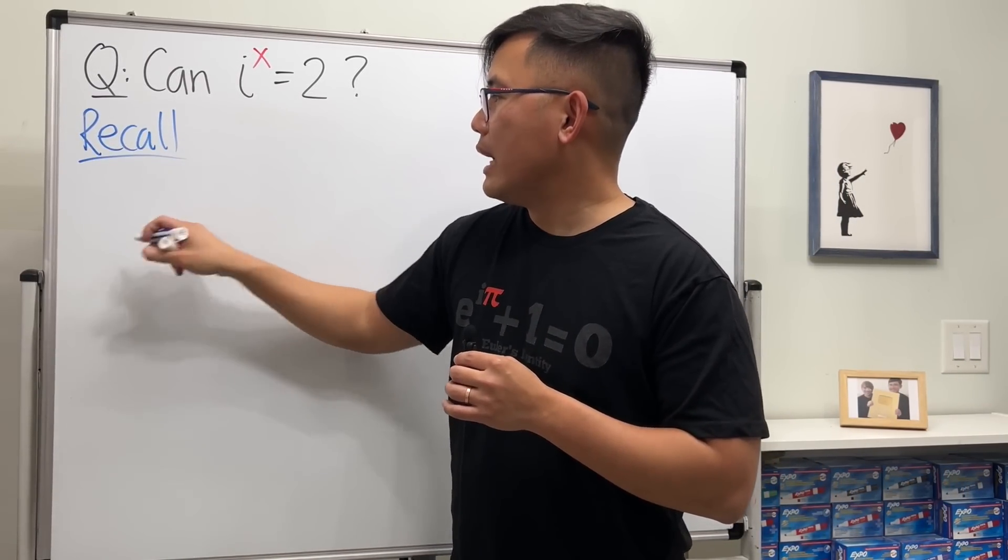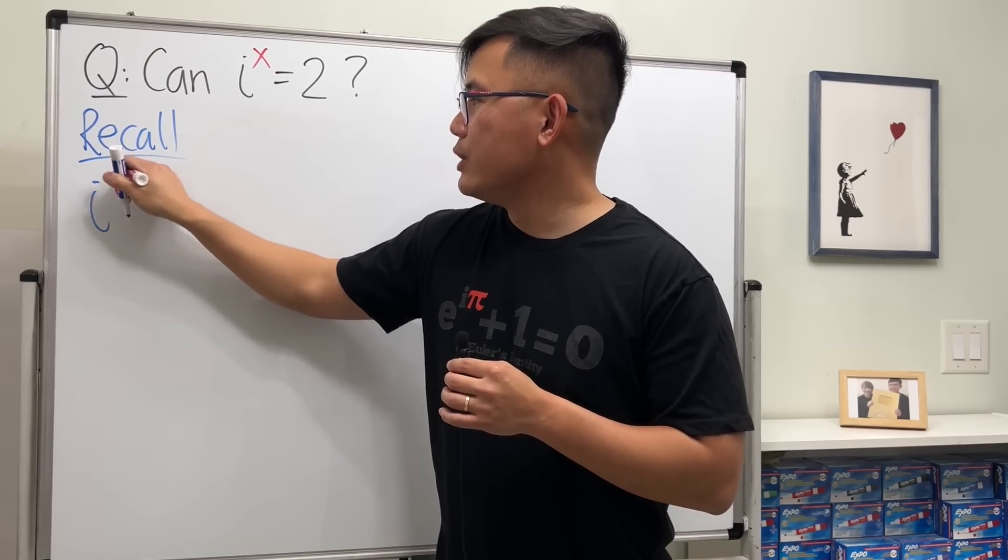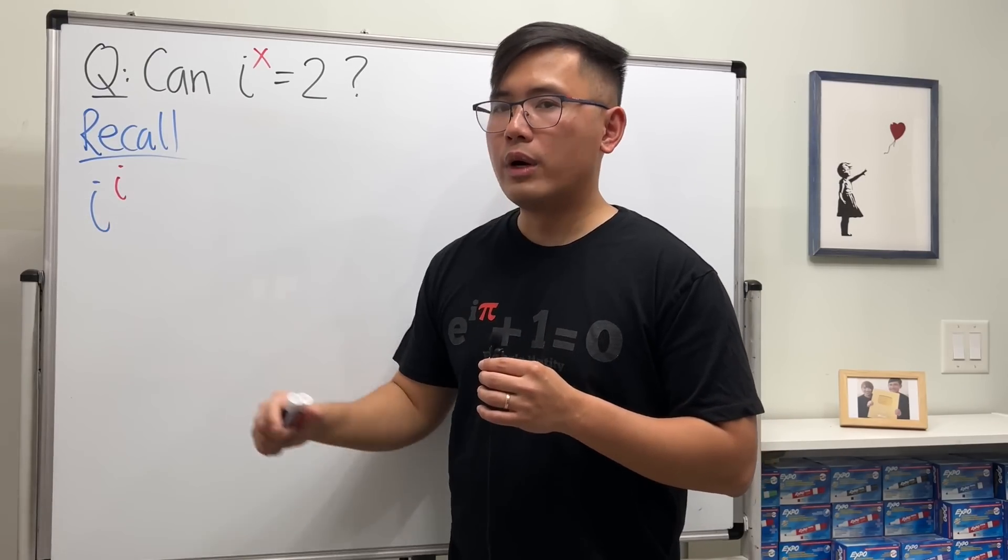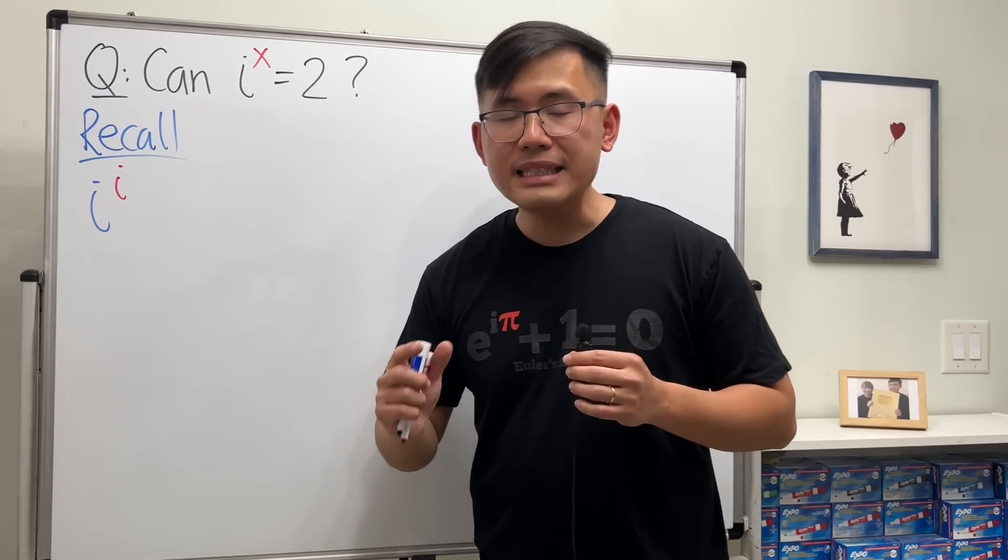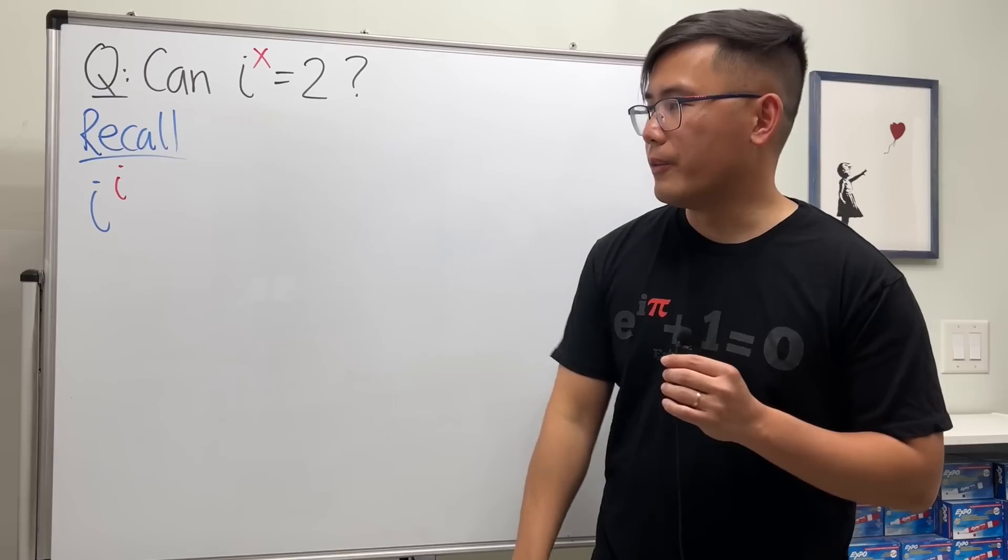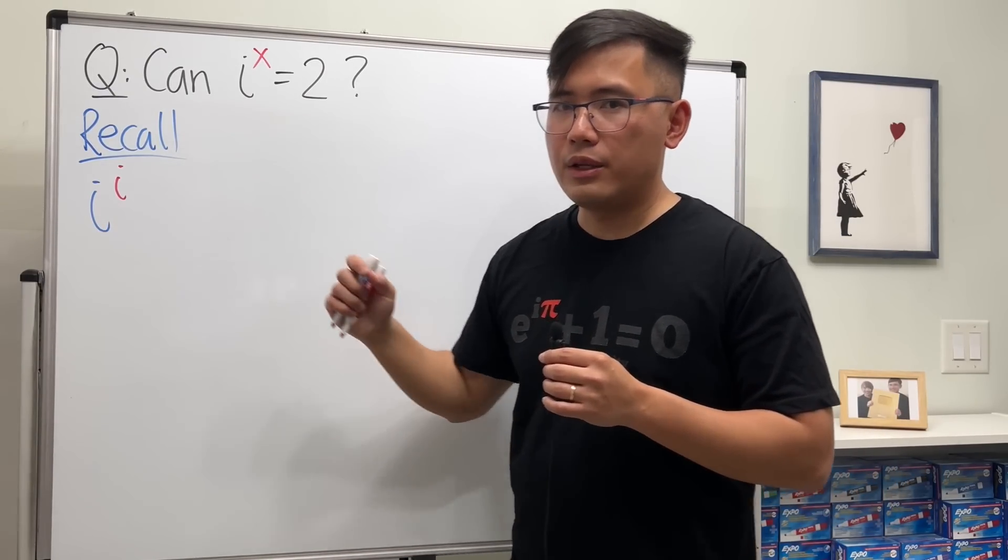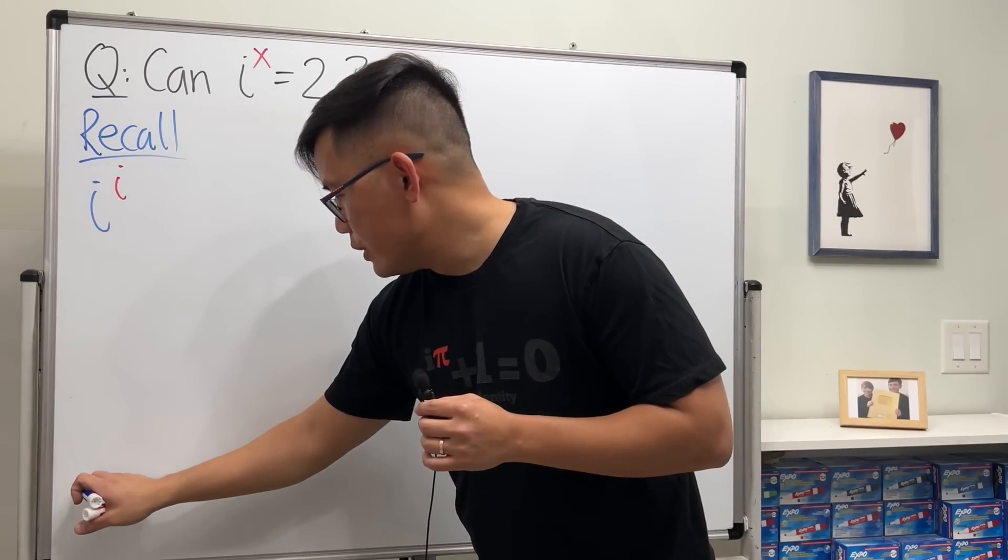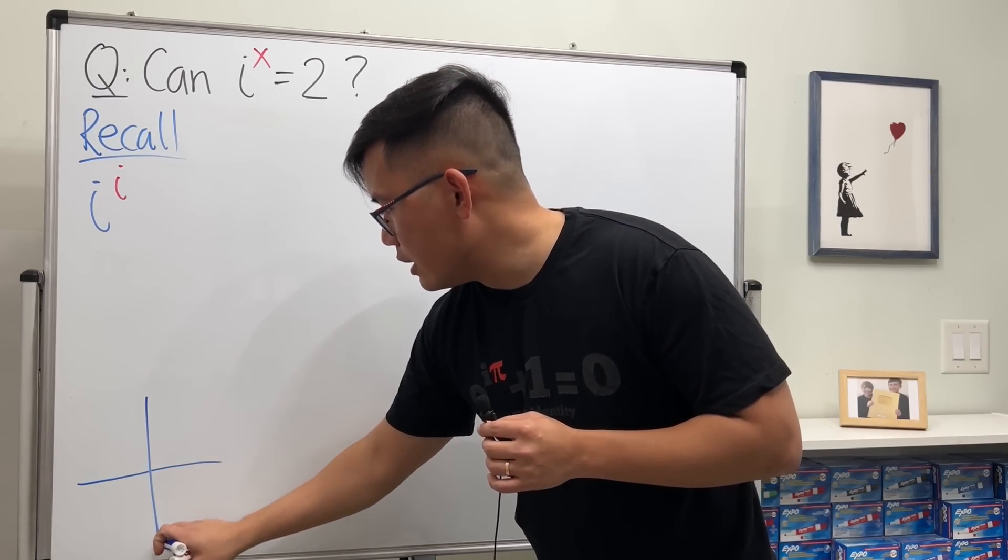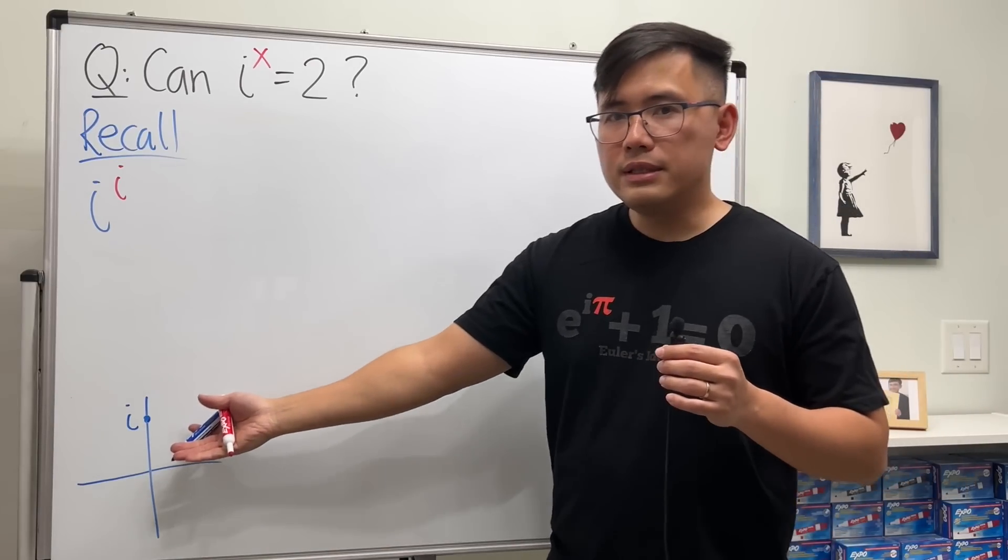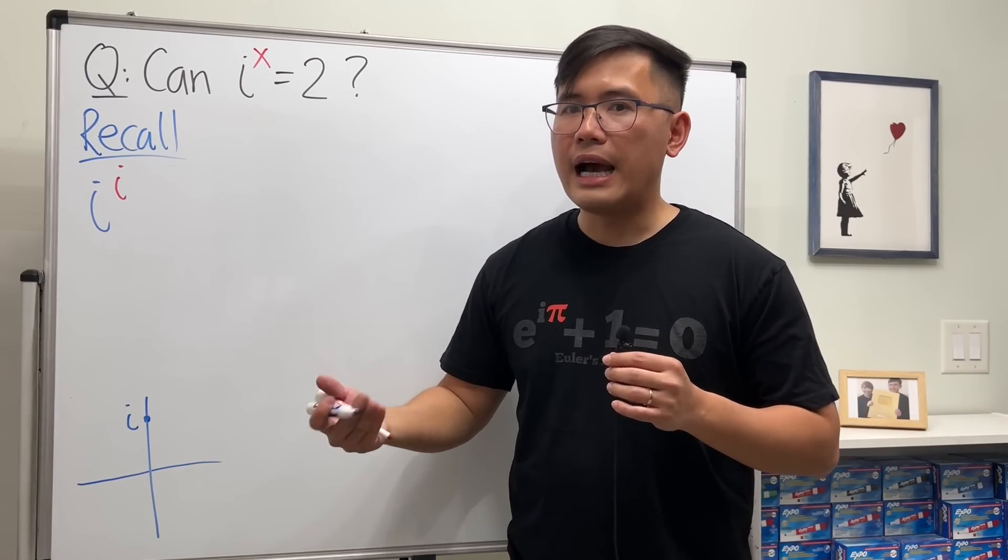How do we figure out i to the i? Notice that the base and also the power, they are both imaginary, but the result is always real. To figure this out, we first look at the base i and put that into the polar form. So we take a look at the real axis and the imaginary axis. i is right here.